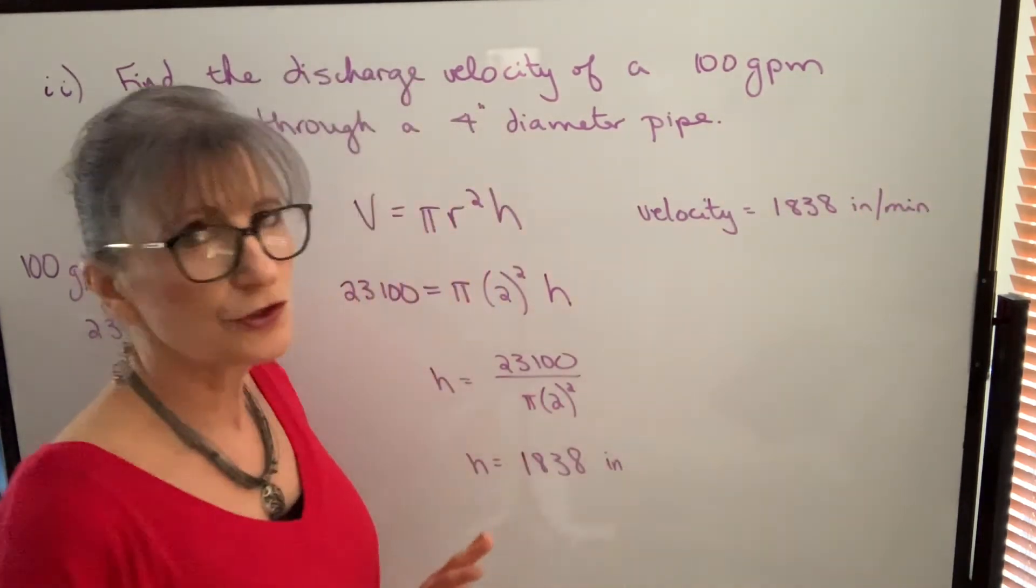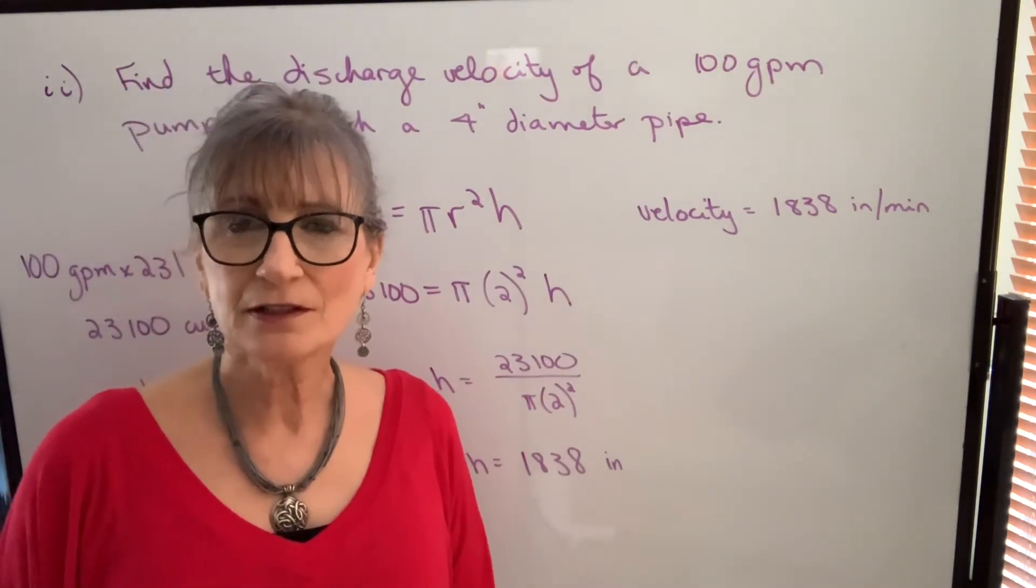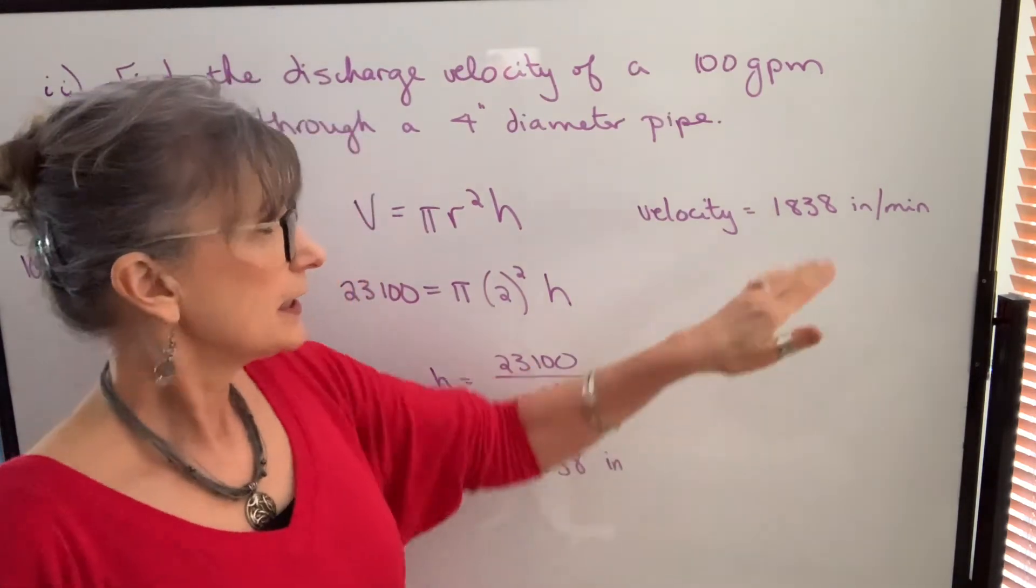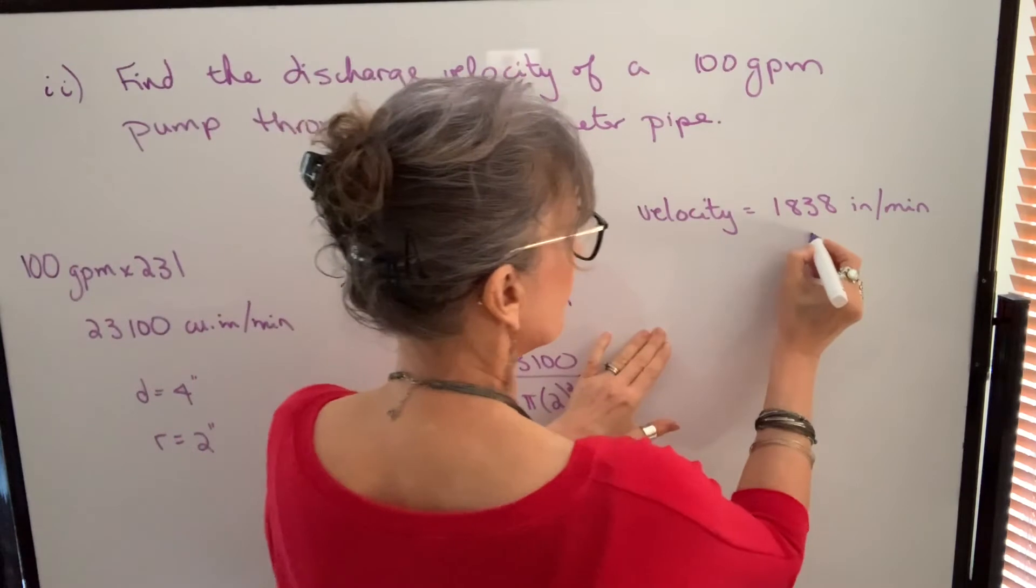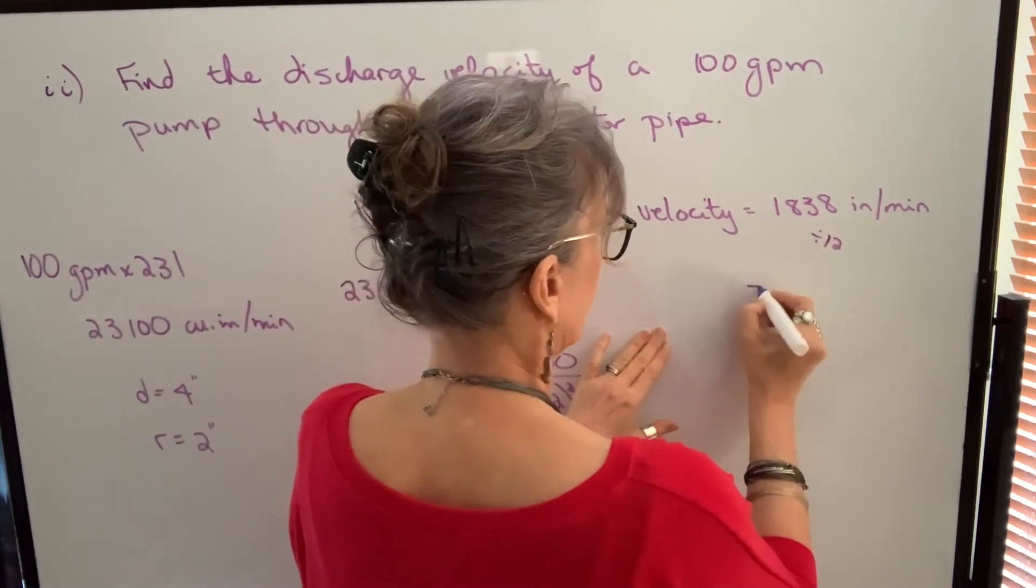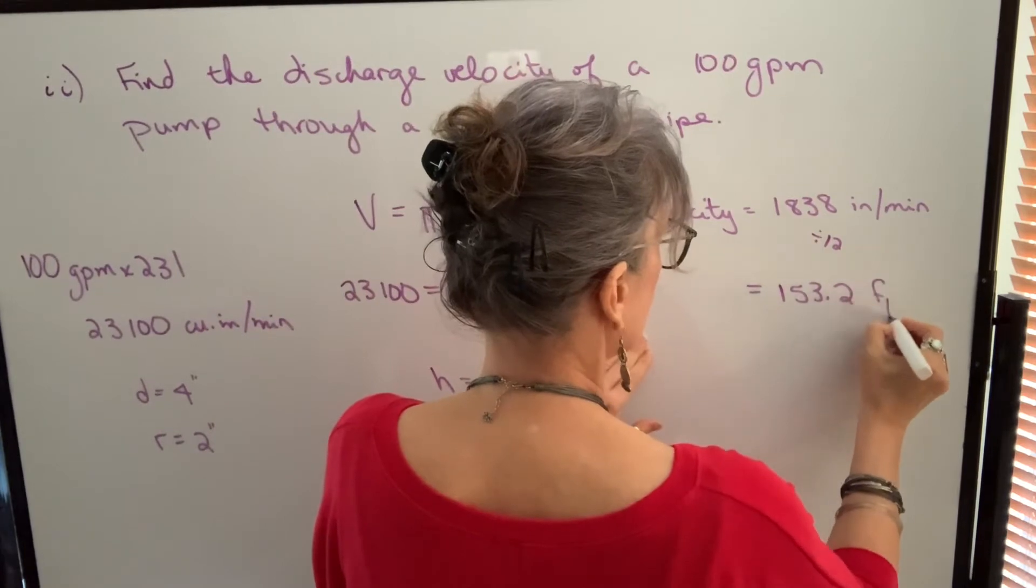So the discharge velocity will be 1,838 inches per minute. But that's not usually the unit that discharge velocity is expressed in. Usually it's either feet per minute or feet per second. Let's do one thing at a time. Let's change inches to feet. And the way that we do that is we divide by 12. So we get 153.2 feet per minute.